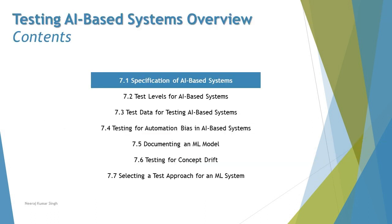Chapter 7 covers a lot of topics: specification of AI-based systems, test levels for AI-based systems, data for AI-based systems, automation bias for AI, documenting an ML model, testing for concept drift, and selecting a test approach for an ML system. Put together, almost everything a fundamental tester should know about AI testing is included here. In this tutorial we'll start with 7.1 — Specification of AI-Based Systems.